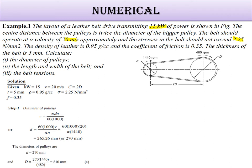Capital D equals 270 times 1440 by 480. That means the rpm of smaller pulley divided by the rpm of the bigger pulley. We get 810 mm. The belt length formula uses C equals 2 times D, which is given.